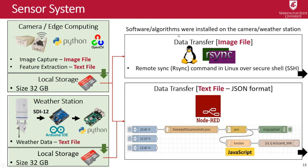After the camera captures the image, the data is stored locally on an SD card inside the camera. Weather data from the weather station is also stored on the SD card. I then have an algorithm to transfer the data to the cloud system using a simple command-line tool from Linux — essentially a secure copy command — to send the image files to the cloud. I use another tool to transfer text files such as NDVI values to the cloud system. We have time points at 11 a.m., 12 p.m., and 2 p.m., and at every time point we send the text file to the cloud.